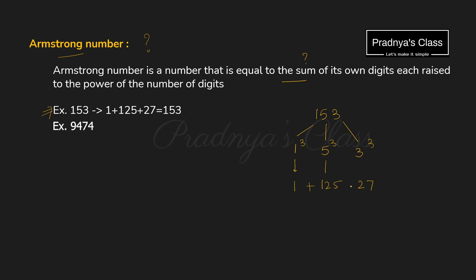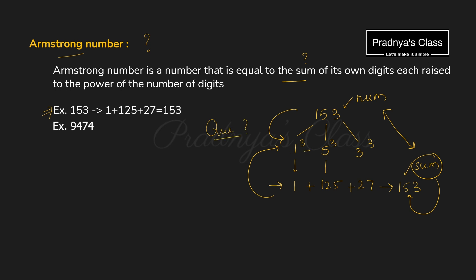In the third step we need to add them — the answer is 153. Look at the original number and the sum: both are equal. That is the definition of an Armstrong number — if we calculate the sum of the cubes of the individual digits, we get the same number. Why cube? Because it is a 3-digit number, so the power is 3. For a 4-digit number the power is 4, and so on. The power equals the number of digits. To keep it simple, first we will write the code for a 3-digit number, then generalize it.